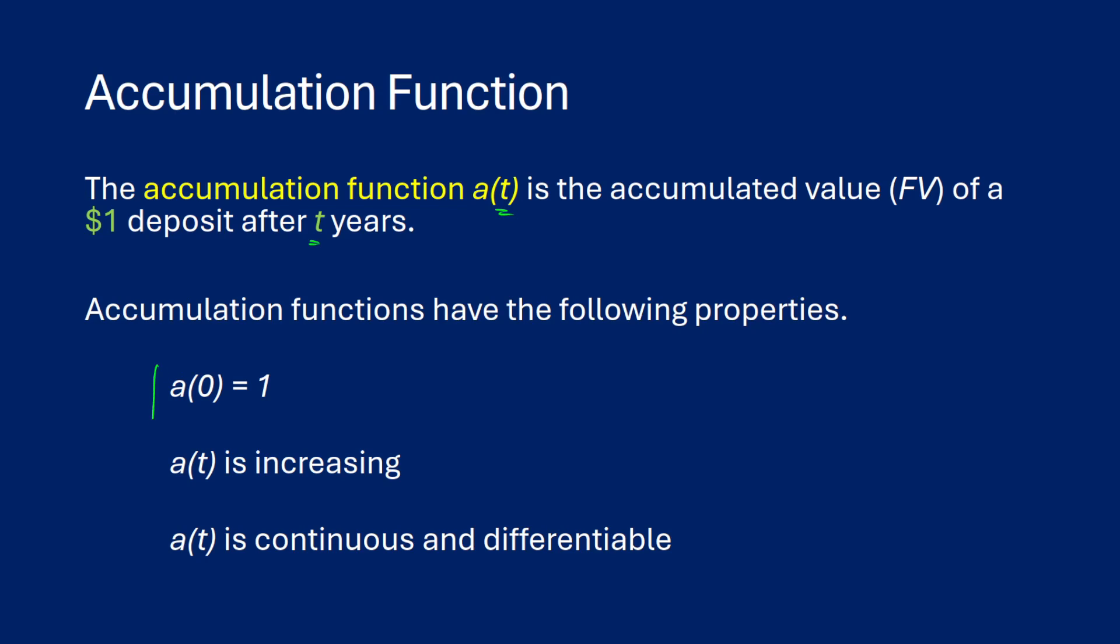One is that a(0) is equal to 1. This means that when we just stick in money, we haven't accrued any interest yet, it is going to be $1. If we want to put in something that is not $1, then we have the amount function, which we'll talk about later, which will basically scale the accumulation function.